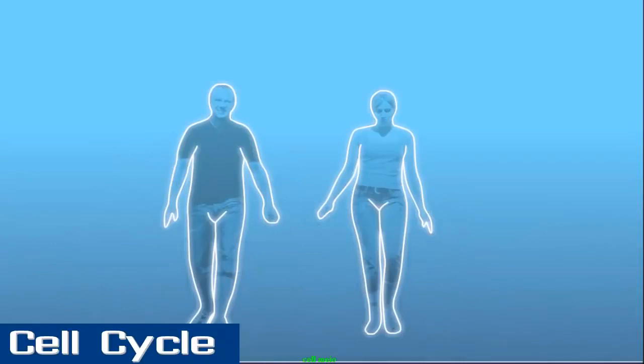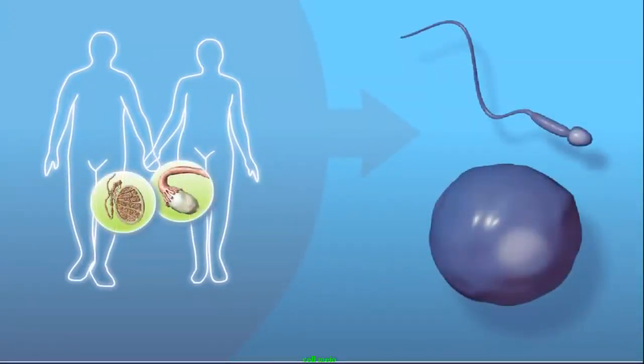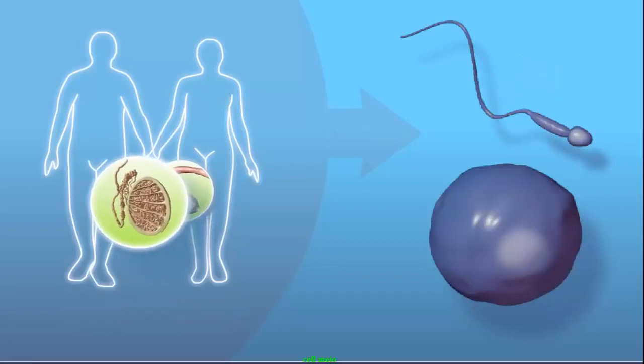Meiosis is the process by which haploid cells are produced from a diploid cell. For this to occur, the chromosomes must be correctly sorted and distributed in a manner to create genetically unique cells with half the number of chromosomes as the original cell.